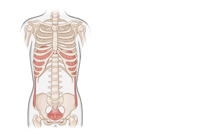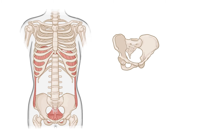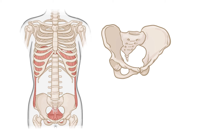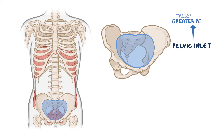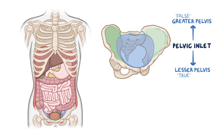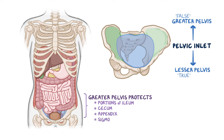However, to better understand the anatomy, the inferior boundary which separates the abdominal cavity from the pelvic cavity is an imaginary plane called the pelvic inlet, which divides the pelvis into a greater or false pelvis above and a lesser or true pelvis below. Similar to how the ribcage protects some of the superior organs, the greater pelvis protects some of the lower organs of the abdomen, including portions of the ileum, cecum, appendix, and sigmoid.